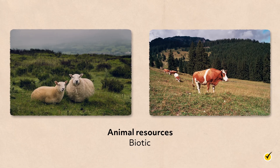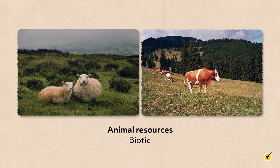I want to quickly go over exactly what these resources provide to us. First up are animal resources, which, if you remember, are biotic. Animals provide humans a range of food and other resources: milk, cheese, eggs, meat, leather, fur, transportation, and so on. For example, oysters produce pearls, which are used in jewelry and are valued by many people.